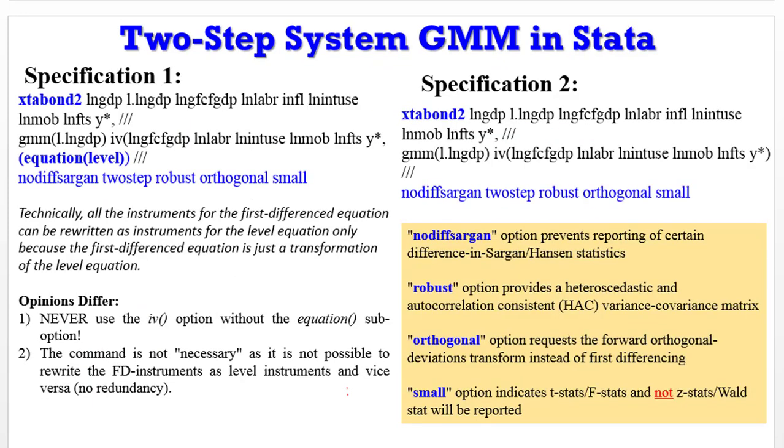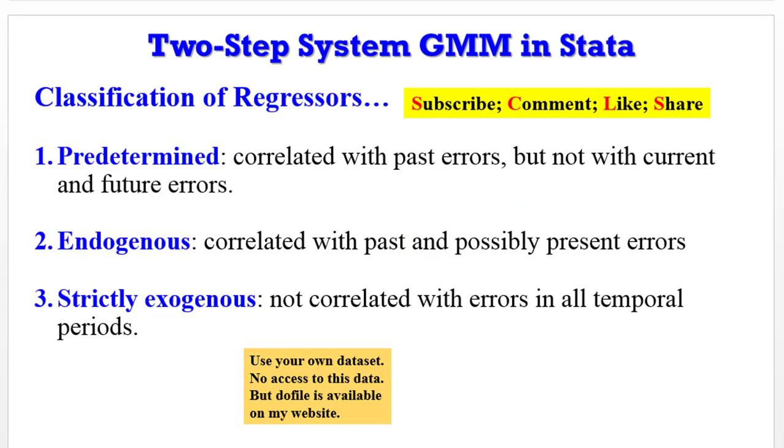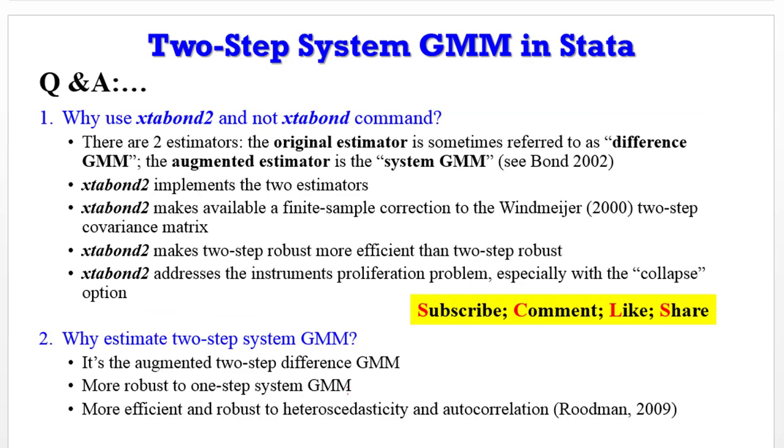I've explained all these in detail right from my videos under difference GMM and the 1-step system GMM. Why do we estimate the 2-step system GMM? It is simply the augmented 2-step difference GMM. It is more robust to the 1-step system GMM. More efficient and robust to treating heteroskedasticity and autocorrelation.